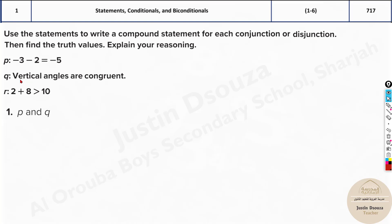Now let's read the statements. First statement, P is -3 - 2 = -5. Now you need to analyze whether it's true or false. Yes, absolutely, this is true, right? So I'll just write T.